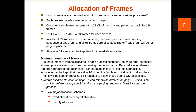Each process needs some minimum number of pages. For example, if a user process is 10 KB and each frame is 1 KB, then does the OS have to allocate 10 frames to the user process, or is 5 enough, or 2 enough? All these things have to be considered by the operating system.